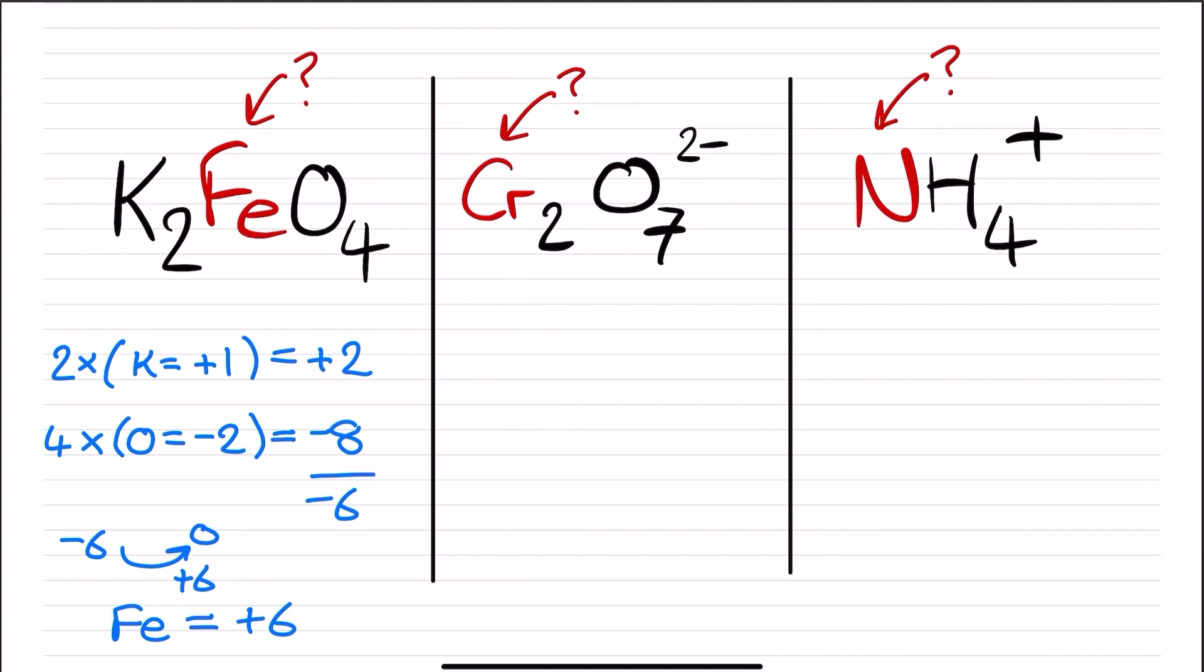For the central one, the compound has a negative two ionic charge, meaning there is a negative two imbalance in the oxidation numbers. The oxygen once again is presumed to be negative two, and there are seven of them, so this is negative fourteen.